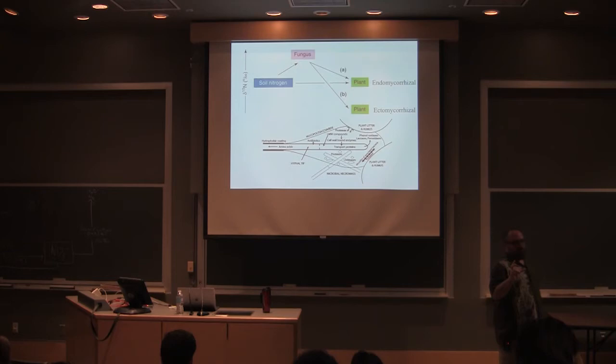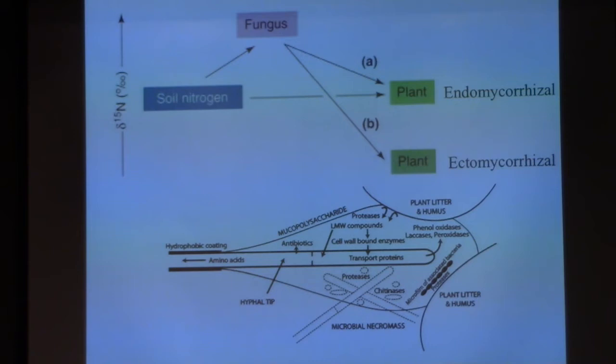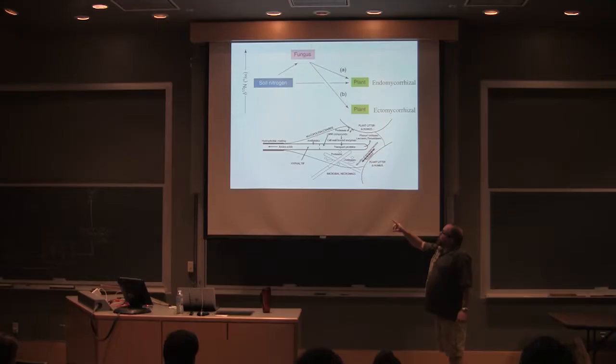In both cases, the fungus itself, when it picks up that nutrient from the substrate in the soil, it's an enriching event — so if you sample fungal hyphae, you get something that's enriched. When it transfers it to the plant, if it's endomycorrhizal, it very annoyingly brings it right back to about what the soil nitrogen was, and what it delivers is depleted. If it's ectomycorrhizal, it depletes so much that it actually becomes more depleted than soil nitrogen.